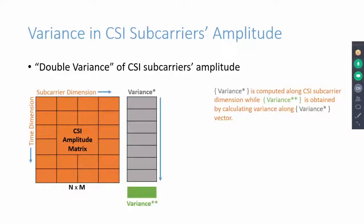To explain observations quantitatively, we employ the so-called double variance method. CSI amplitude is an n by m matrix in which n is the number of time indices and m is the number of OFDM subcarriers. We first compute variance along the subcarriers dimension and then along the variance star vector. The final number will represent the combined effect of CSI fluctuations due to person's movement and the number of targets.